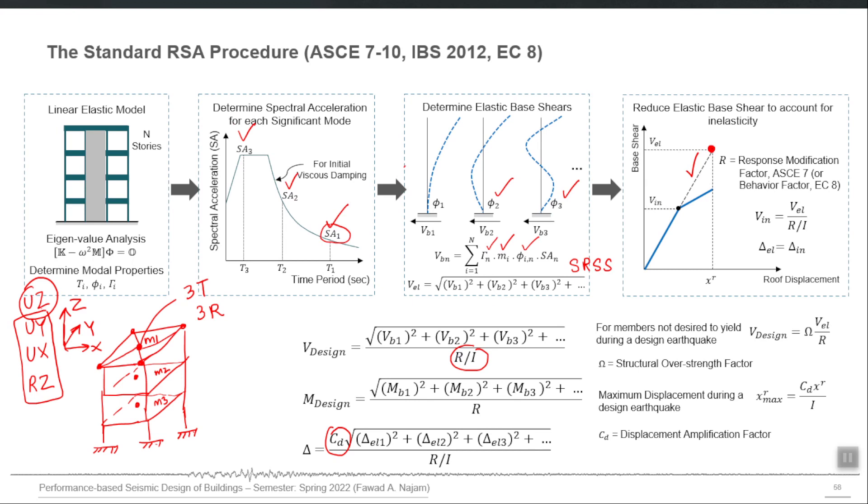You must include it if you want to perform the time history analysis in vertical direction. Otherwise the time history analysis will all be zero, it will not give you any results if the vertical mass is ignored. So by default it is ignored unless you check that option in ETABS to include it.